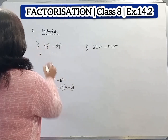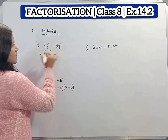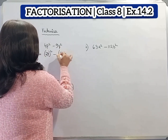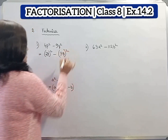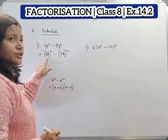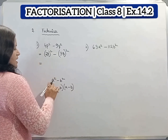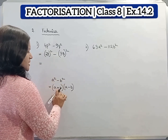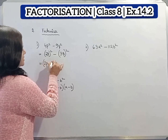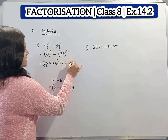So 4p square we can write as 2p whole square, minus 9q square we can write as 3q whole square. Now a square minus b square — here a equals 2p and b equals 3q. So a square minus b square equals a plus b into a minus b, that means 2p plus 3q into 2p minus 3q.